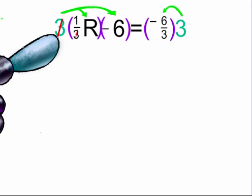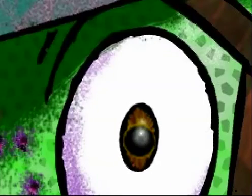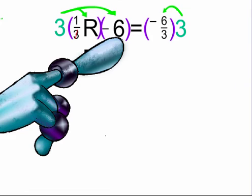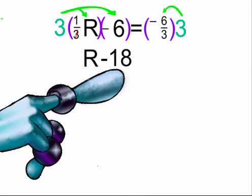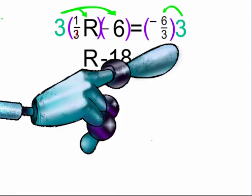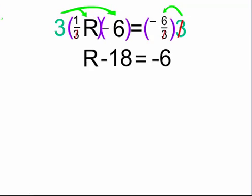The two 3's cancel out and we are left with r. For the next term, we have negative 6. 3 times negative 6 equals negative 18. On the other side, the two 3's cancel out and we are left with negative 6. Our equation now reads r minus 18 equals negative 6.